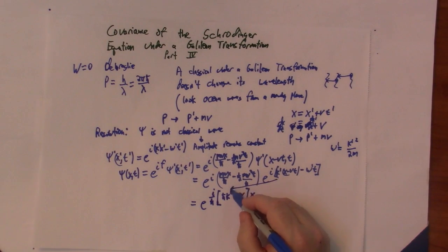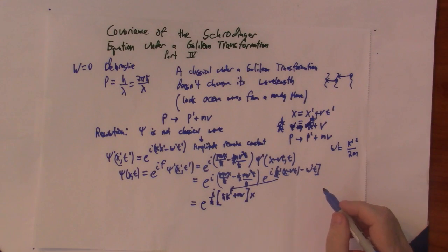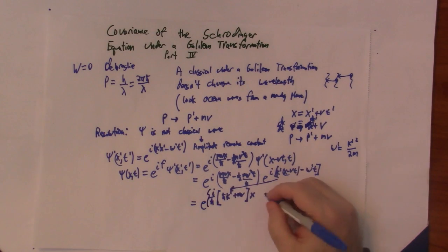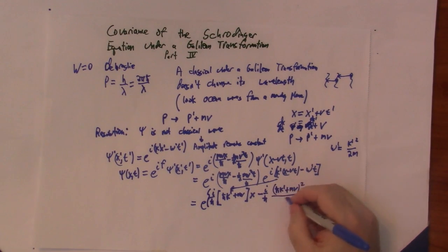And this comes from here. So it goes here. Then I'm also left, this whole thing is going to be the phase, minus i over h bar, h bar k prime, plus mv, squared over 2m, times t.